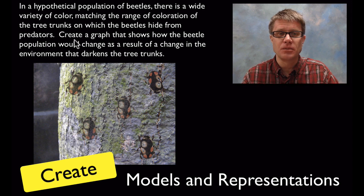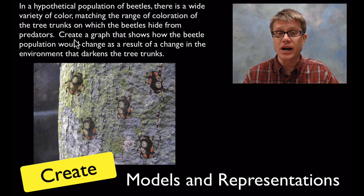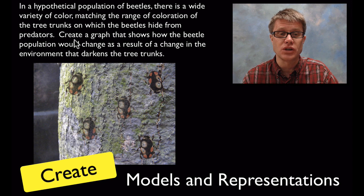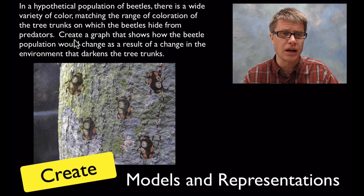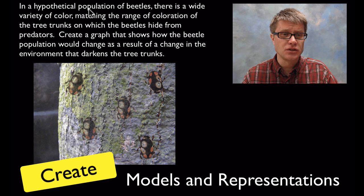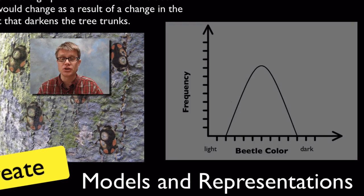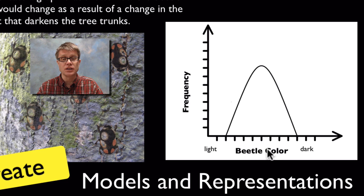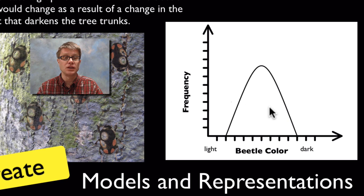So we've got a hypothetical population of beetles. There's wide variation in color matching the range of coloration of the tree trunks. Create a graph that shows how the beetle population would change as a result of changes in the environment that darken the tree trunks. And so what are some first things that I would look at? We've got a beetle population, there's differences in color. We have a variety of different colors. And so we're going to represent that with a graph. We want to show the frequencies. But we're going to have a normal distribution. In other words we could put beetle color here along the x-axis from light to dark and we're going to get a normal distribution. Some of the beetles are really light, some are really dark, but most of them are going to be in the middle.